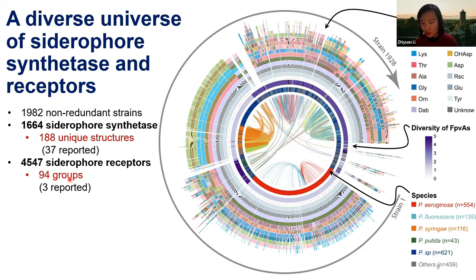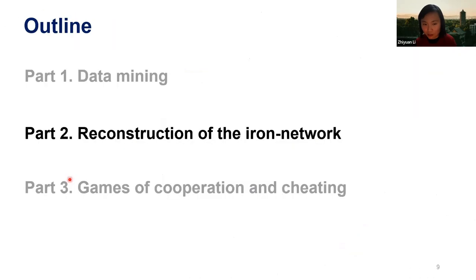So first we have this overview of the iron-scavenging machineries. But what we are still interested in is how they interact with each other — how they interact via iron.